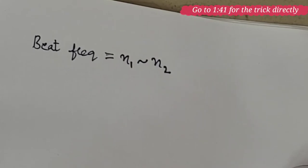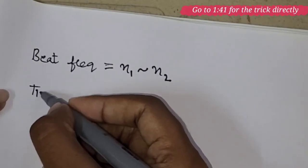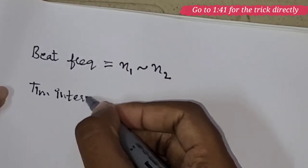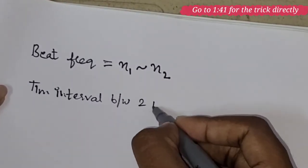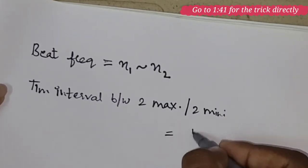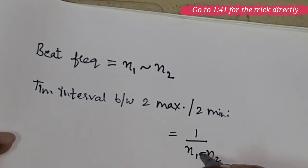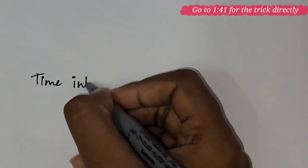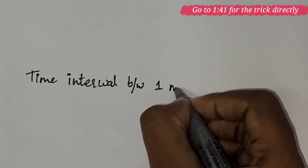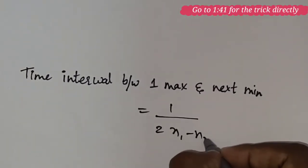Beat frequency is also defined as number of beats produced per second or number of maxima per second or number of minima per second. Next is the time interval between two successive maxima or two successive minima. Time period is inverse of frequency, right? So, the formula becomes 1 by N1 difference N2.